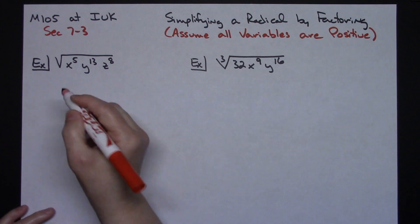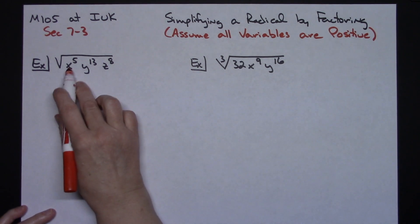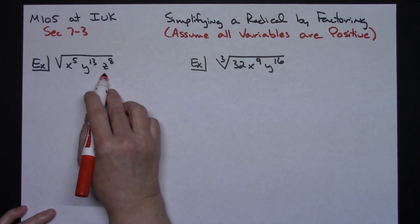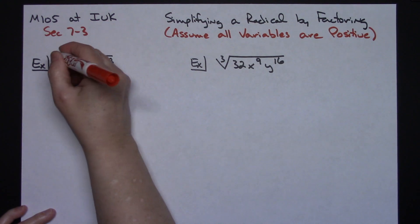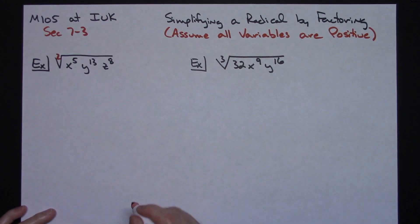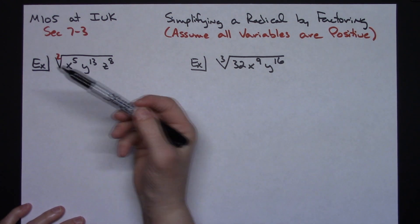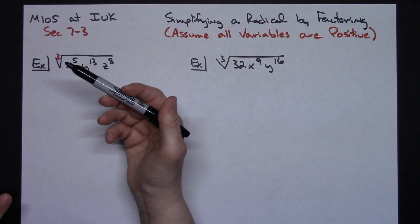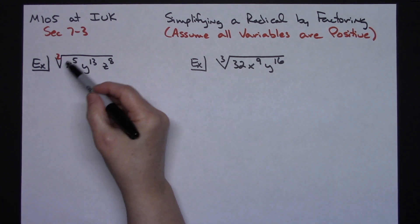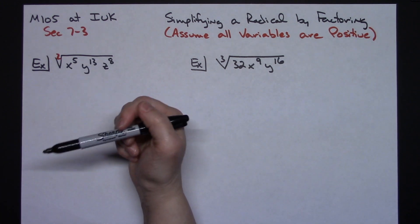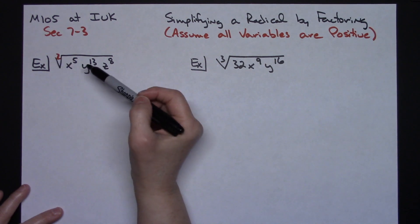So in this first example here I've got the square root of x to the 5th, y to the 13th, z to the 8th. It is a square root so I'm going to go ahead and put that 2 in there just so we can see it. Now usually the way I go about teaching this is at this point we've done quite a bit of these, and so whenever you've got the variables with the exponents the first thing I look for is can I take 5 divided by 2, can I take 13 divided by 2, can I take 8 divided by 2.